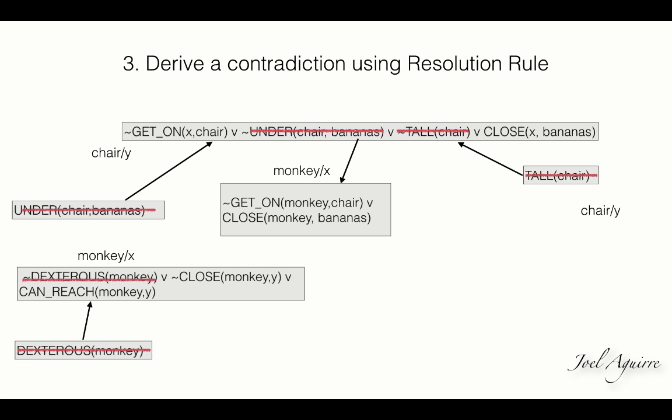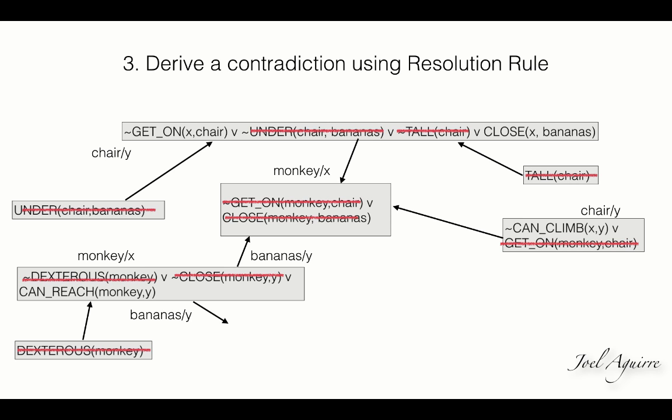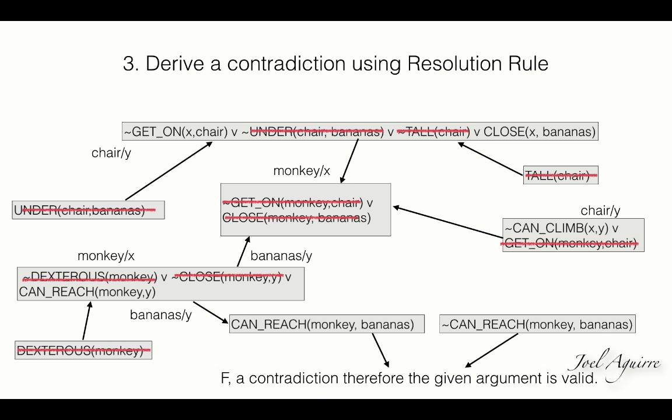Replace y with chair. In statement 12 removes GET_ON(monkey, chair). And then the final unification, bananas y, removes CLOSE(bananas). That leads to a contradiction, CAN_REACH and not CAN_REACH, monkey bananas. Therefore, the given argument is valid.